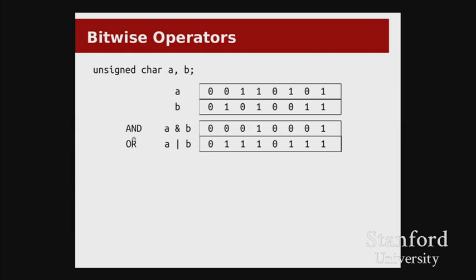The next operator is OR. If a or b — or both — are one, then the result will be one. You can see that there's a one everywhere except for the two spaces where both a and b have a zero.